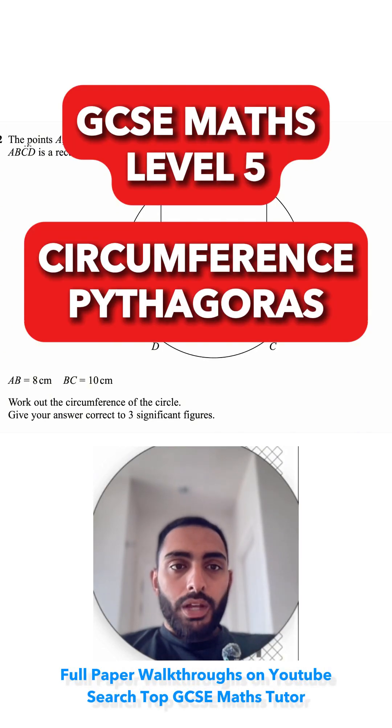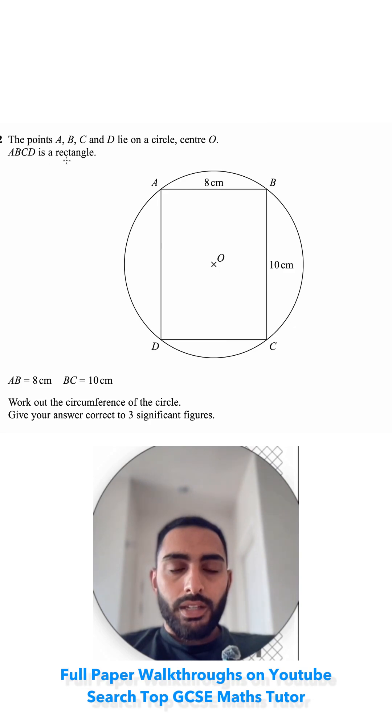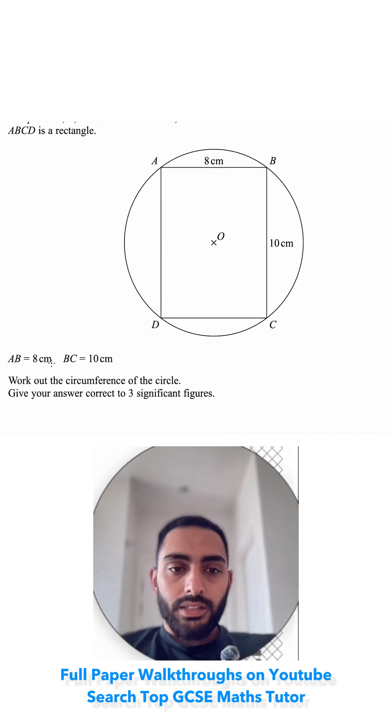Question 12: The points A, B, C, and D lie on a circle center O. ABCD is a rectangle, so this length is the same as that length and that length is the same as that length. AB is 8cm which is already on, BC is 10cm which is already on.